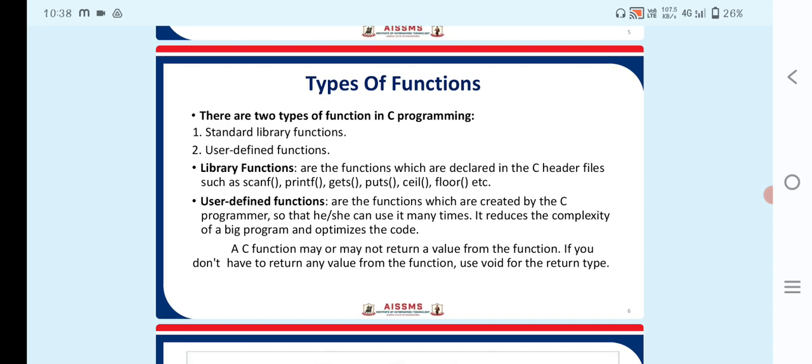Next point is types of functions. There are two types of functions in C programming: first is standard library functions and second is user-defined functions.